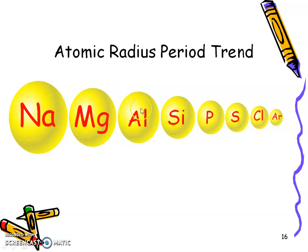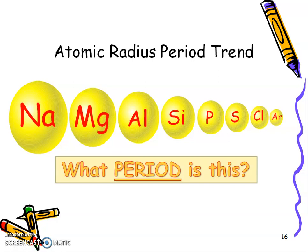Now let's look at the trend going across a period. Notice we have sodium here all the way to argon. And what's happening to the size of those atoms? They're getting smaller because of the attraction between those positive protons inside the nucleus and the negative electrons. It's making that attraction stronger, pulling in those electrons and making the size smaller of the atom. So what period is this? Again, look at that periodic table. And hopefully you came up with period three.